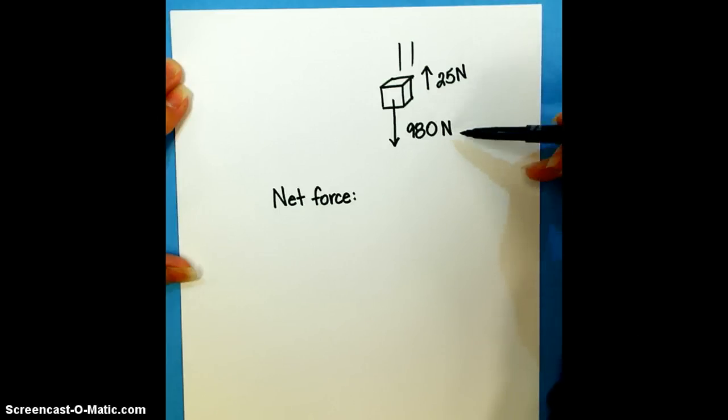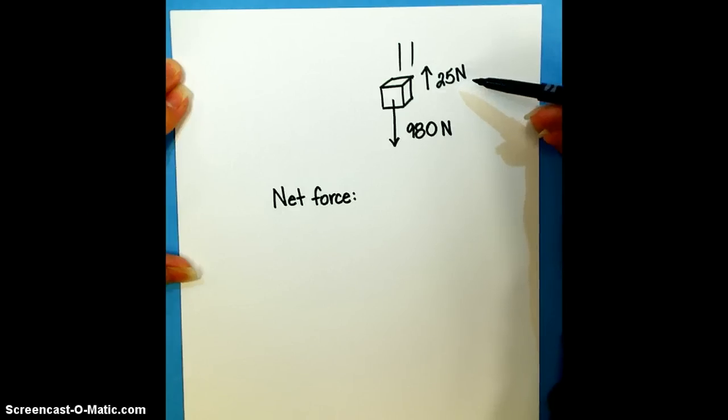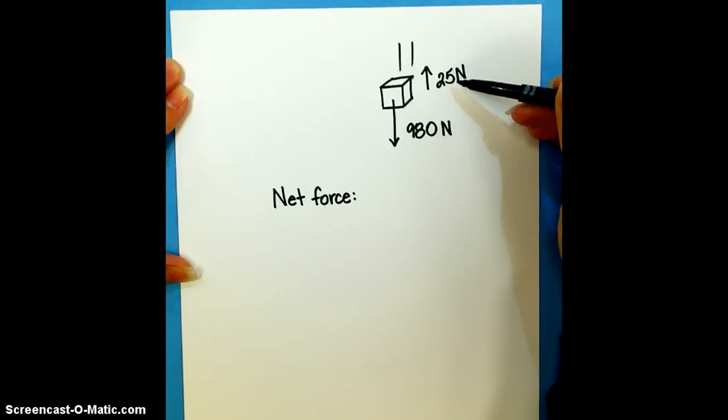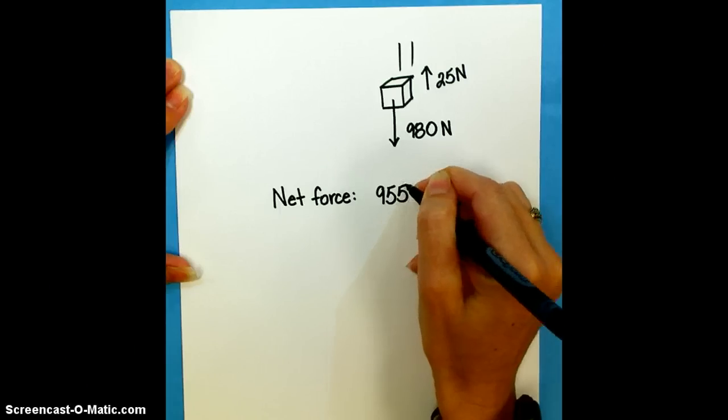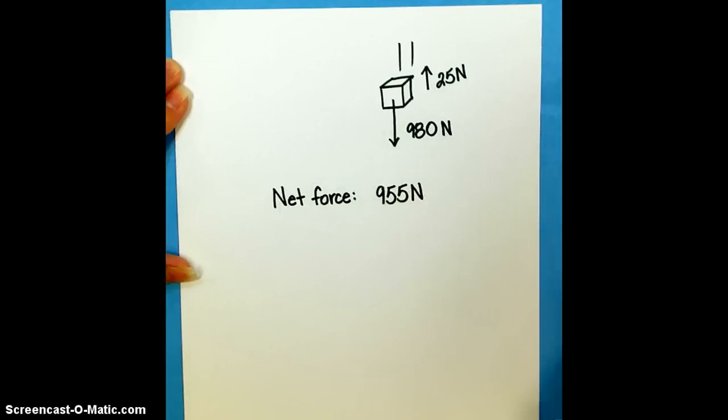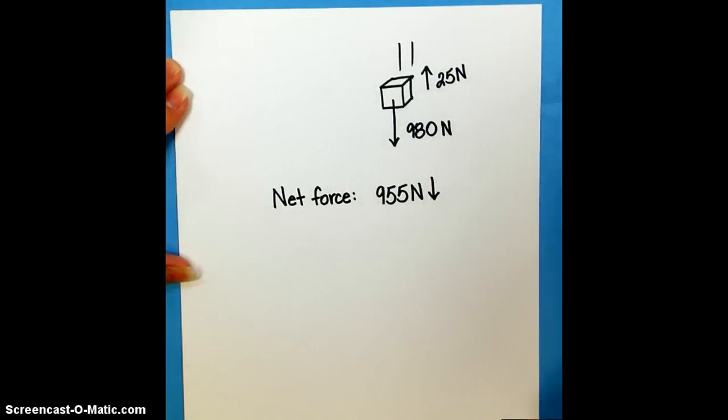In this situation, we have one force that is acting downward. We have another force that's acting up. So they're acting in opposite directions. When we combine them, we're going to do that by subtraction because they're counteracting each other. So 980 minus 25 is going to give us a net force of 955 newtons. And we also need to include a direction for our net force. So we're going to put an arrow indicating that the net force operates down because the 980 newton force that we considered is much larger than the upward force.